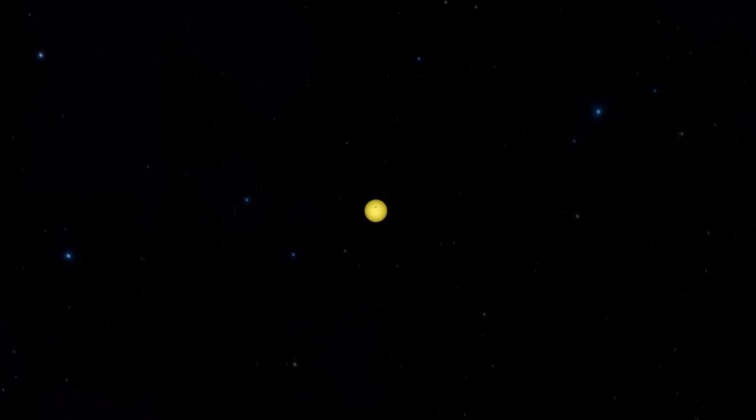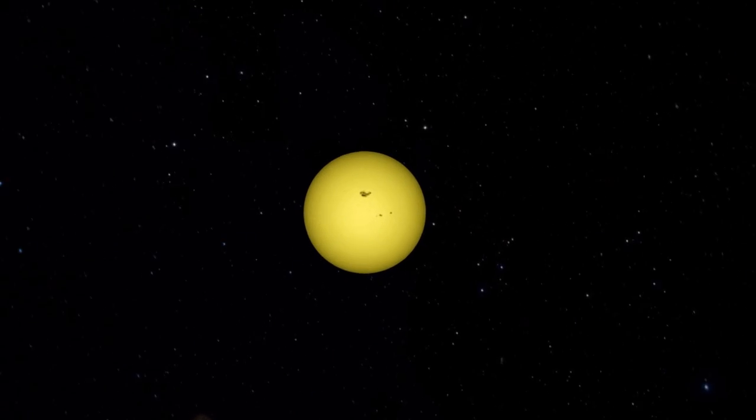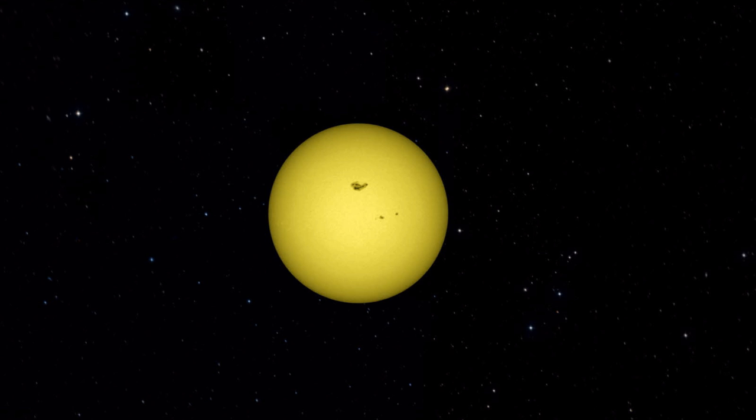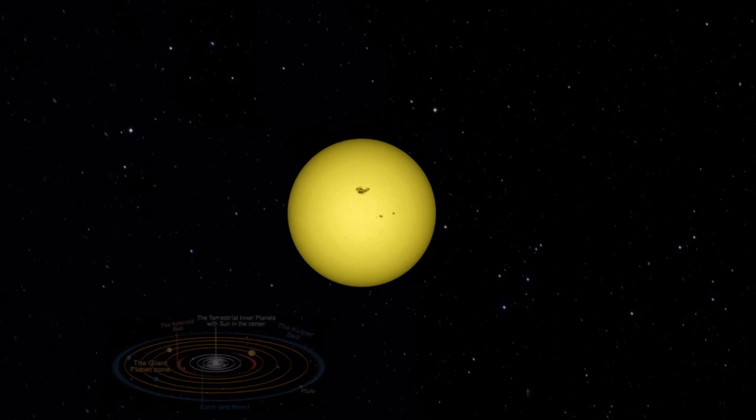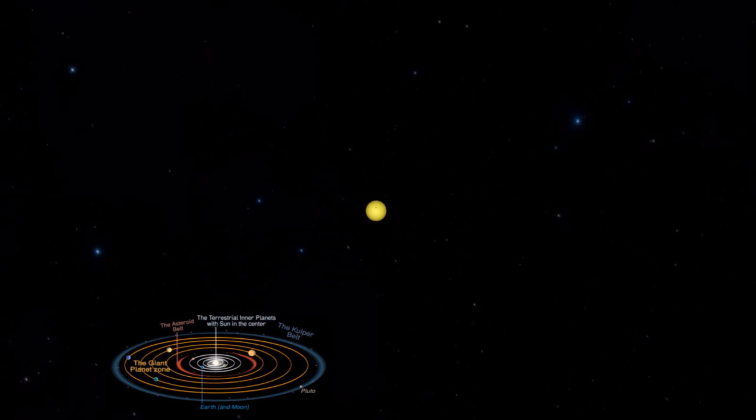Let's focus back in on the sun. As a star forms, a disk of material is left over around it, which, over millions of years, bunches up into the planets that ultimately orbit the star.